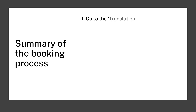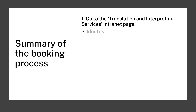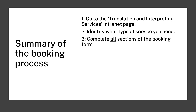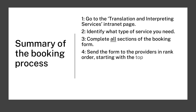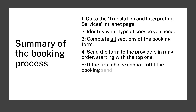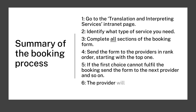Summary of the booking process. One: go to the Translation and Interpreting Services intranet page. Two: identify what type of service you need. Three: complete all sections of the booking form. Four: send the form to the providers in rank order, starting with the top one. Five: if the first choice cannot fulfil the booking, send the form to the next provider and so on. Six: the provider will confirm the booking and costs.